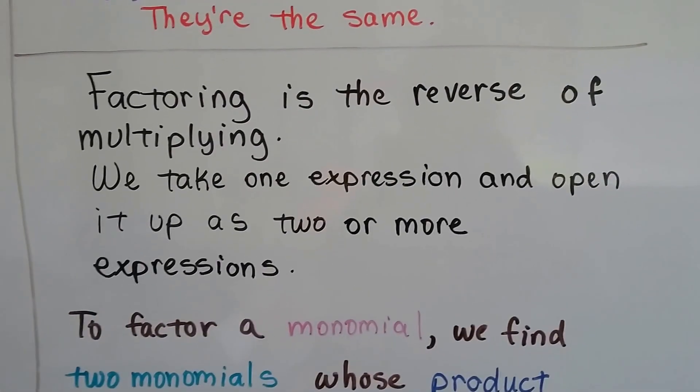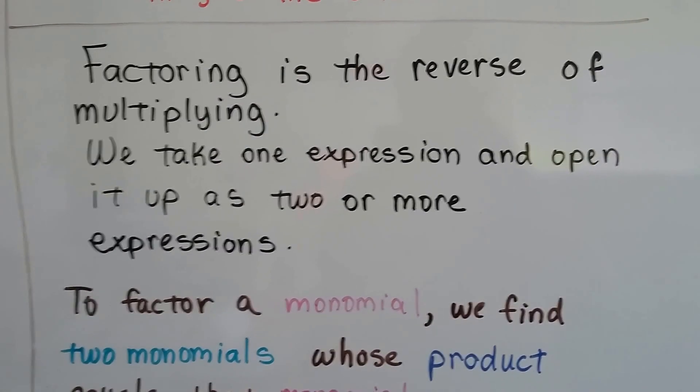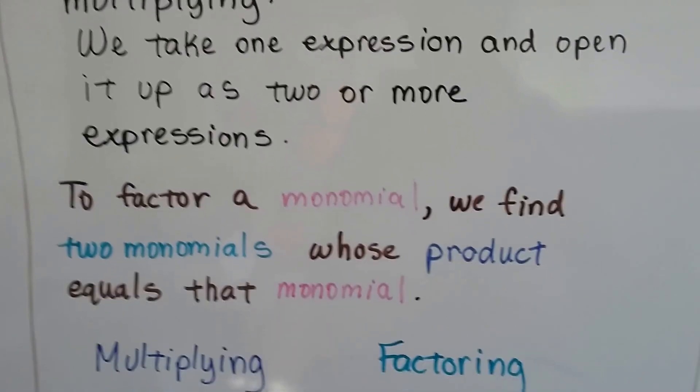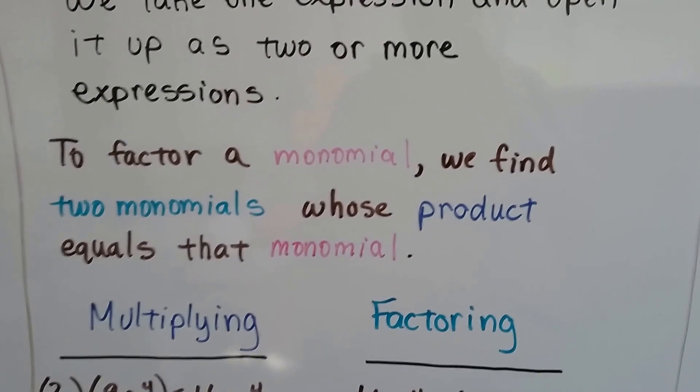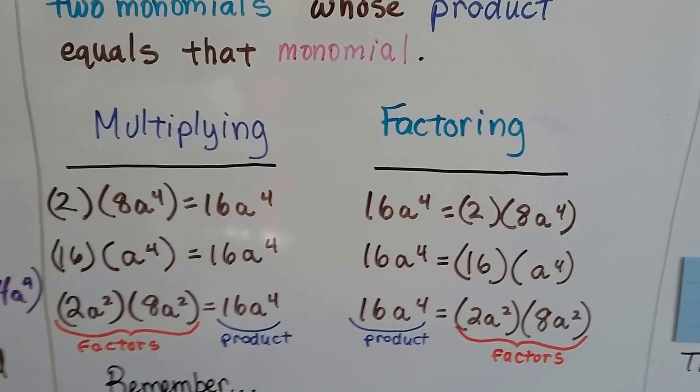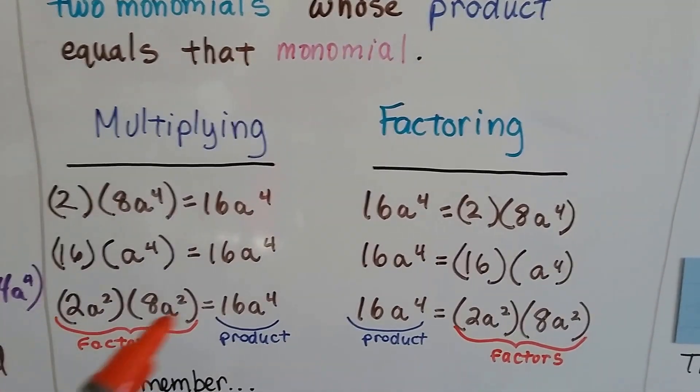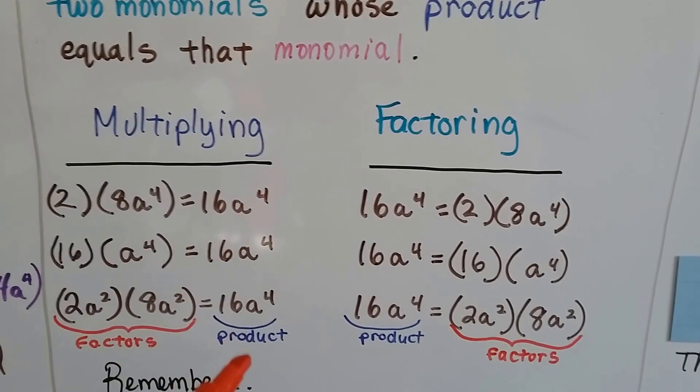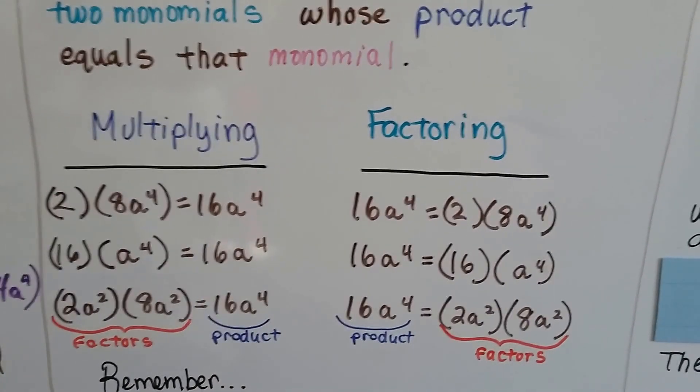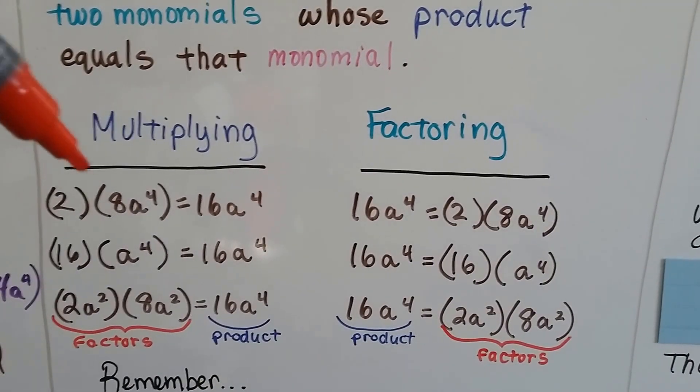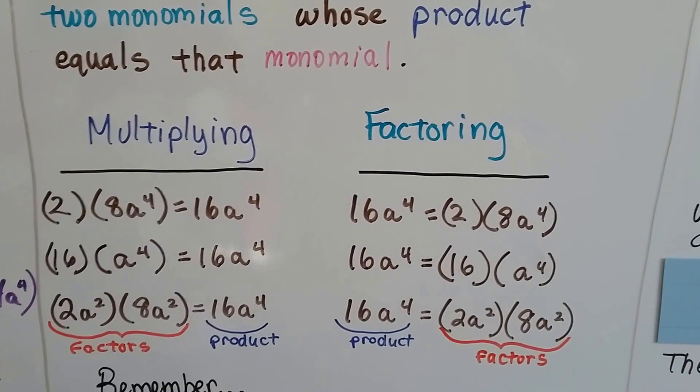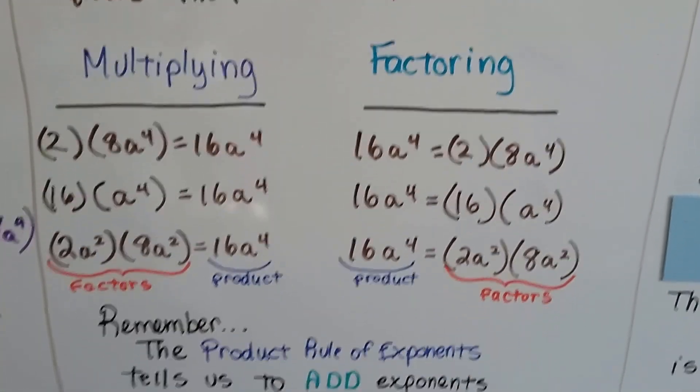And factoring is the reverse of multiplying. We take one expression and open it up as two or more expressions. To factor a monomial, we find two monomials whose product equals that monomial. So here's the difference between multiplying and factoring. These are the factors and this is the product. And now here's the product and here's the factors. So see how it's the reverse? Multiplying goes to a product. Factoring comes from a product.